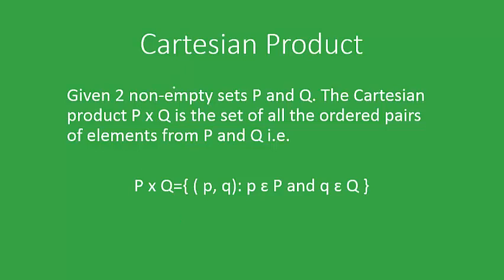First of all, let's look into what is the Cartesian product. Given two non-empty sets P and Q, the Cartesian product P cross Q is the set of all the ordered pairs of elements from P and Q. To write it mathematically, we write all the elements of P separated by commas, and then all the elements of the next set Q.